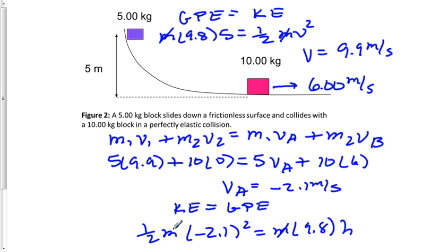One more time, my mass is crossed off. I don't need to have those, so I just need them to find my height. And the height is 0.23 meters. So it's going to go back only about this much here, 0.23 meters up the surface.